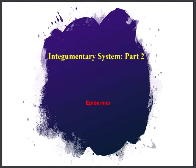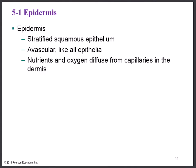In part two of the integumentary system, we'll be focusing on the anatomy and physiology of the epidermis. If you recall from part one, we said the epidermis was made of cells known as the epithelium. In actuality there are many cells there in layers, and if you look at these cells they appear flat. We call the cell type that makes up the epidermis stratified squamous epithelium — stratified means they're in layers.